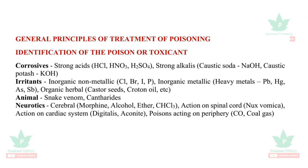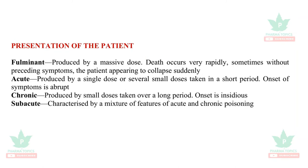General principles of treatment of poisoning begin with identification of the toxicant. It may be a corrosive such as a strong acid or alkali, an irritant (inorganic non-metallic, inorganic metallic, or organic herbal poisoning), animal poisoning such as snake venom or cantharides, neurotics such as cerebral or spinal cord agents, cardiac agents like digitalis, or poisons acting on the periphery such as carbon monoxide and coal gas. The presentation may be fulminant (produced by a massive dose), acute (single dose or several small doses in a shorter period), chronic (small doses over a long period), or subacute (mixture of acute and chronic features).